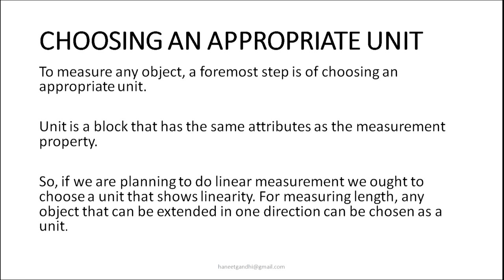How do we choose a unit? To measure any object, a foremost step is choosing an appropriate unit. A unit is a block that has the same attributes as the measurement property. If you are measuring length, your unit should have a property of linearity. If you are measuring area, the chosen unit should have a property of covering the space. If you are talking about capacity, you need a material that can fill the object completely — it could be liquid or solid such as sand — but it should not leave any spaces. Whatever property you are trying to measure, the unit you use should have the similar attribute as the measurement property.